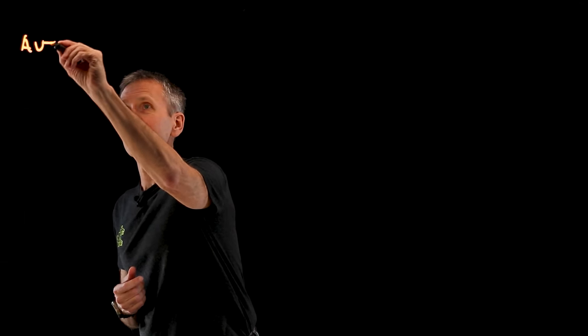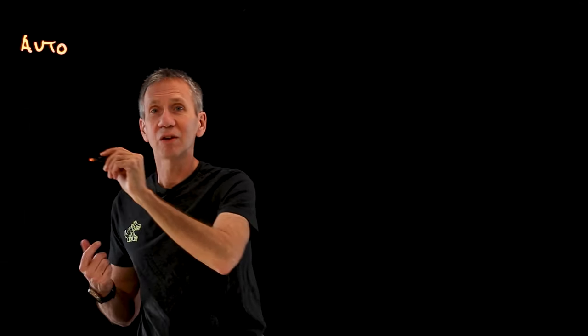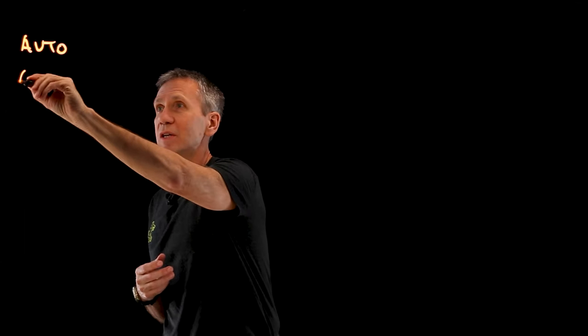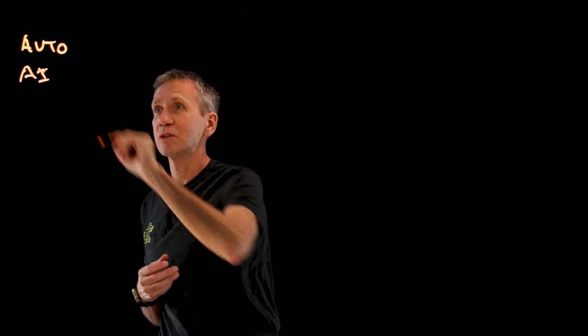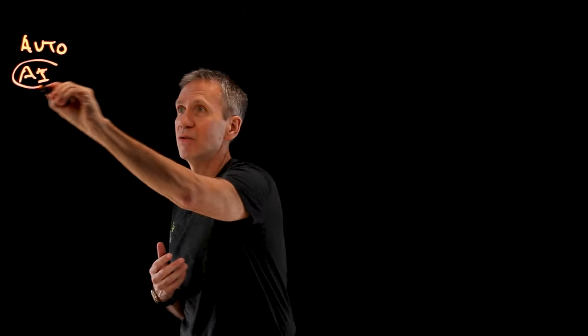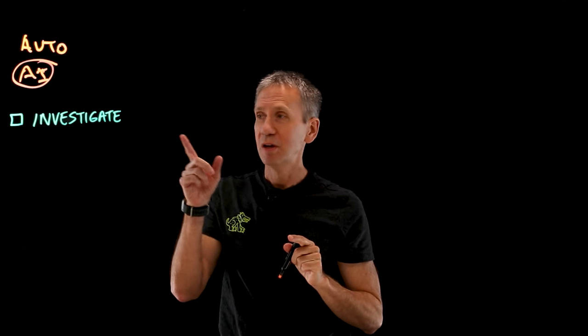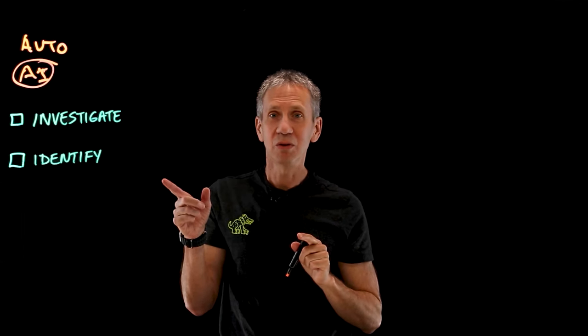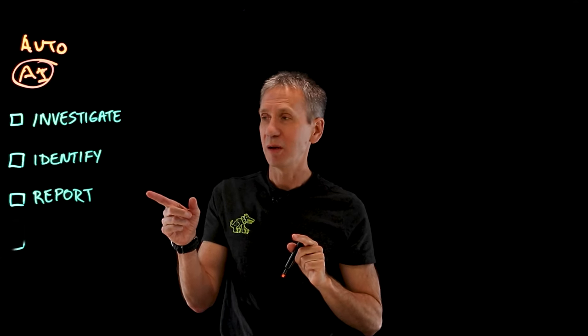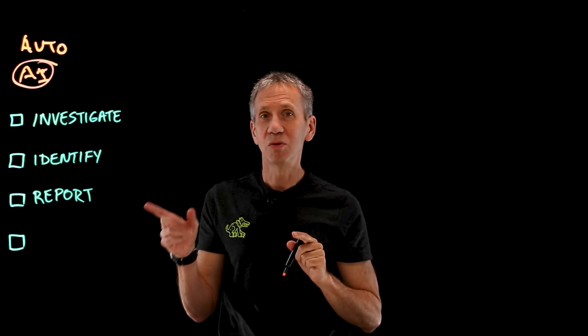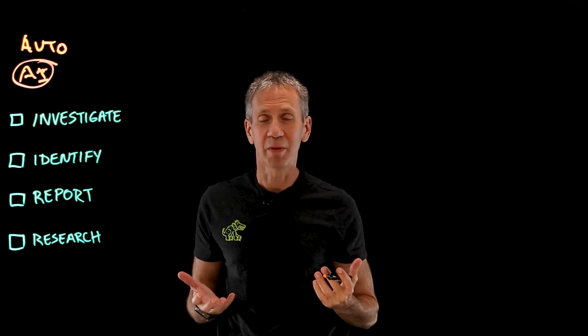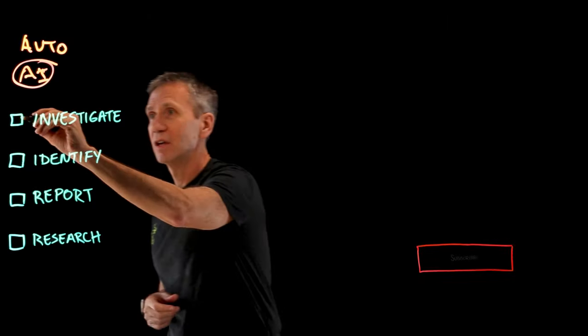Two things we can do as force multipliers: we can use automation, which allows us to work more efficiently, or we can use artificial intelligence, which allows us to work more intelligently. I'm going to specifically focus on AI in this video — to talk about how we can use it to investigate a problem, to identify an issue, to report on a problem, and to research and find out more. So let's start with investigating.